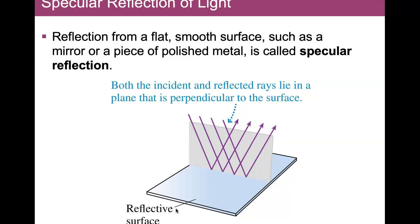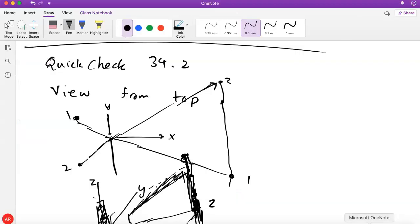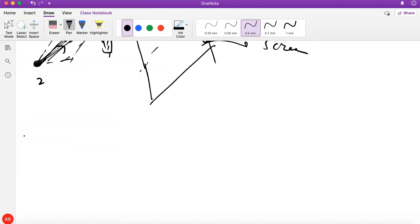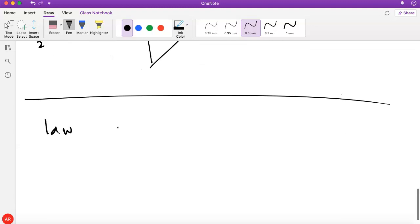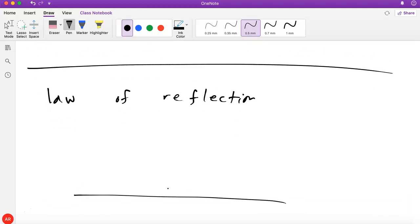Now we can talk about reflection from a flat, smooth surface like a mirror or a polished piece of metal. The idea is quite simple: the incident angle is the same as the reflected angle. That's called the law of reflection.